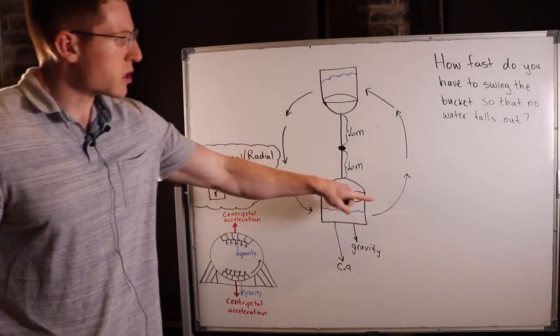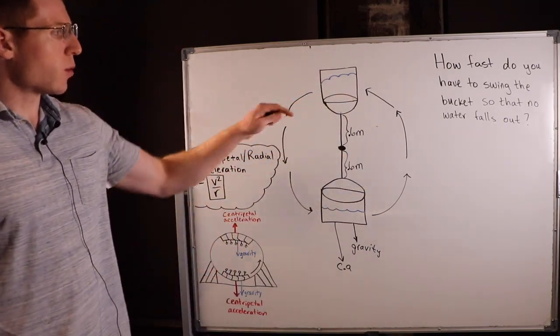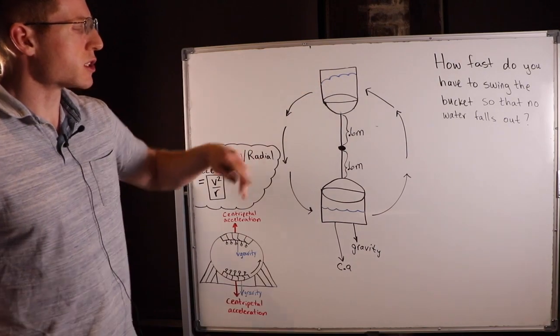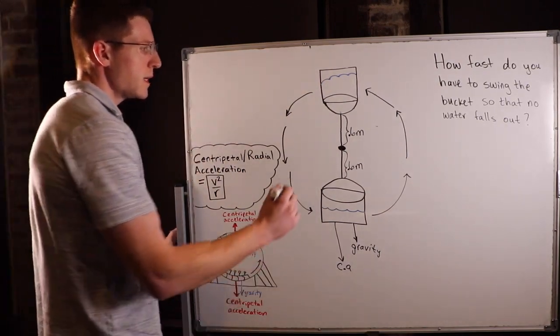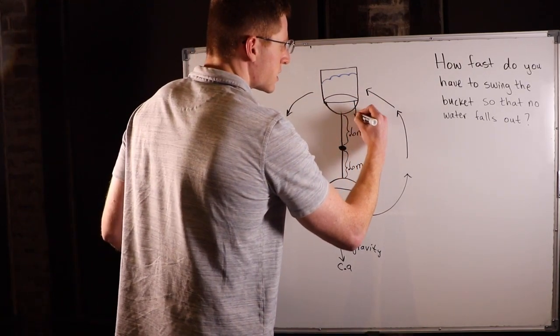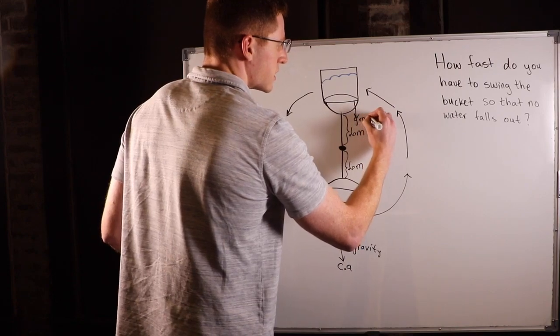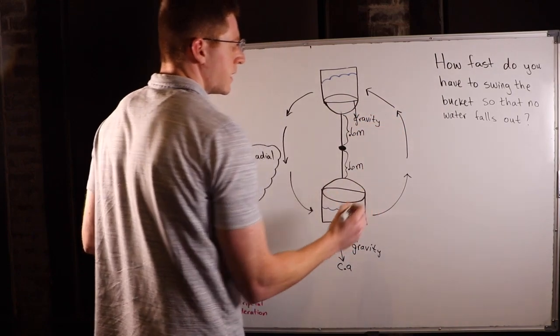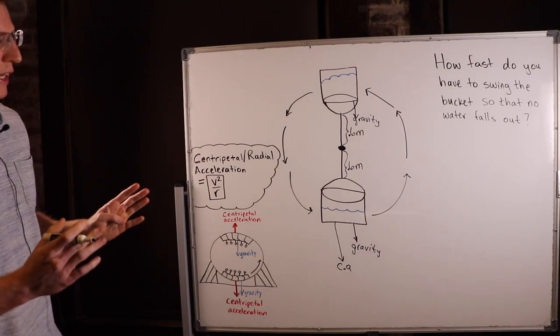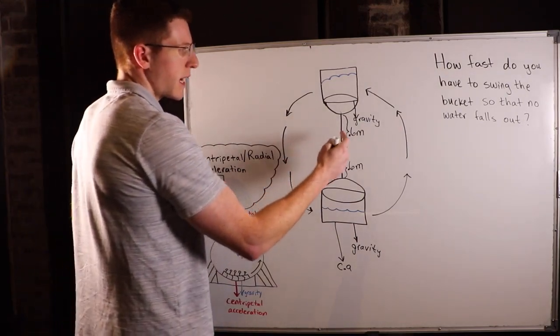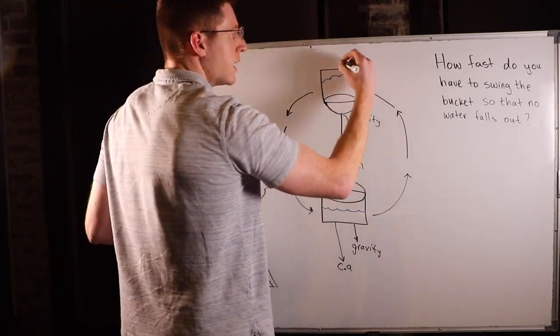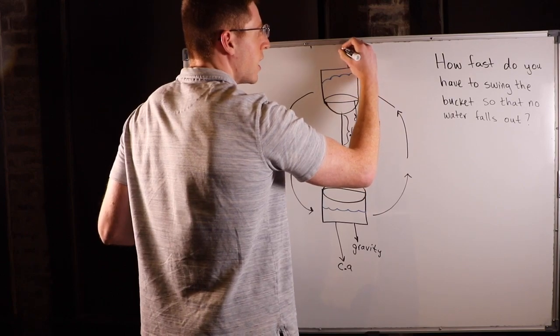But we're interested about the top of the circle. We want to know about what's going to happen up here so that this water stays in the bucket. So again, up here, gravity is still going to be acting straight down. It always does. But now, up here, something interesting happens. Since centripetal acceleration always acts directly out of a circle, it's actually going to be pulling the bucket up here.